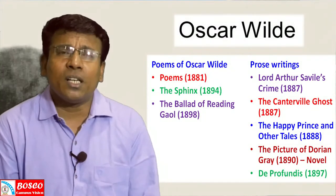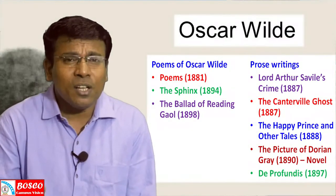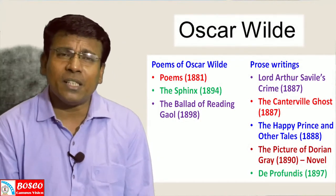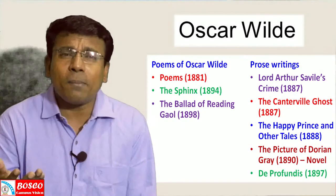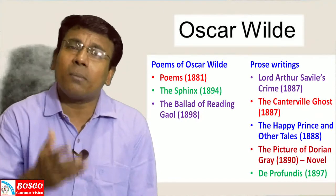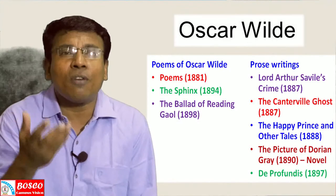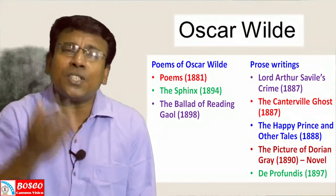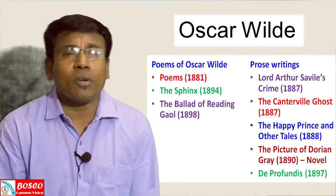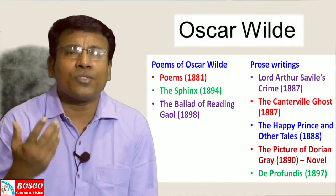Some important prose works of Oscar Wilde: Lord Arthur Savile's Crimes was published in 1887; The Canterville Ghost also in 1887; The Happy Prince and Other Tales in 1888. In 1890 he published The Picture of Dorian Gray, his only novel. In 1897 he published De Profundis.